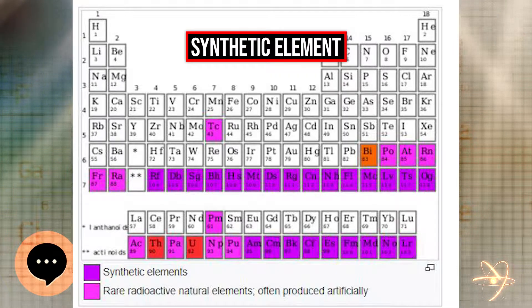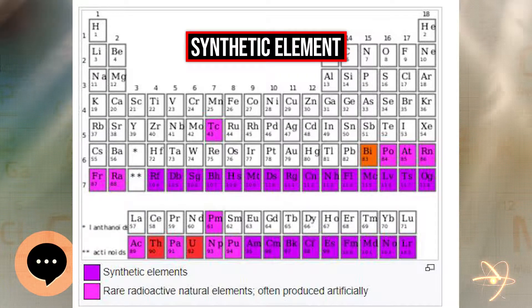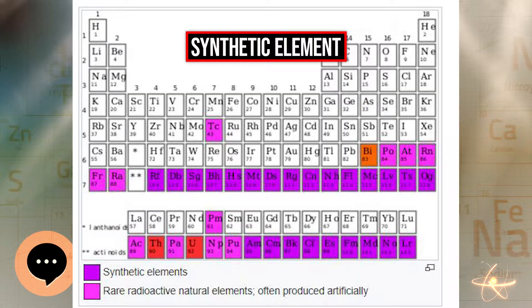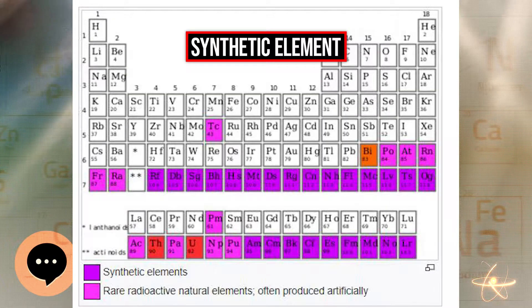The isotopes discovered were einsteinium-253, with a half-life of 20.5 days, and fermium-255, with a half-life of about 20 hours. The discoveries of mendelevium, nobelium, and lawrencium followed.